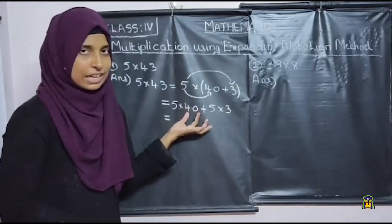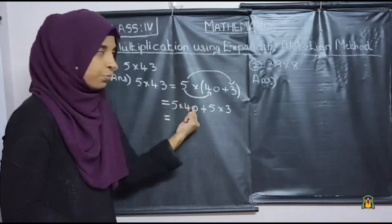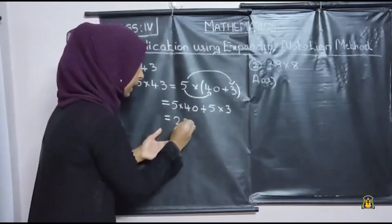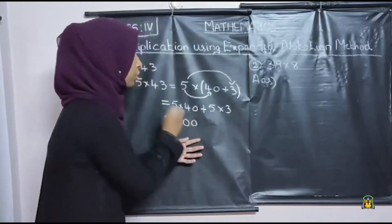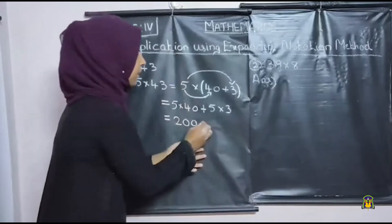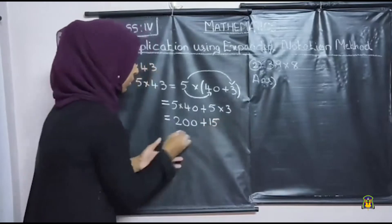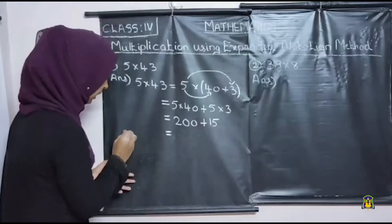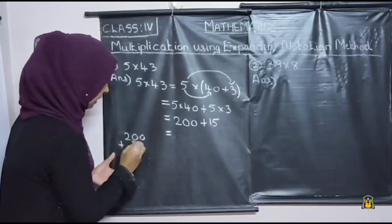We already studied how to find the product for this type. 5 into 40: first, what is 5 into 4? It is 20. Then there is one zero, so put one zero to the right of this number. So 5 into 40 is 200. Then plus: what is 5 into 3? It is 15. Then we want to add these two numbers: 200 plus 15.